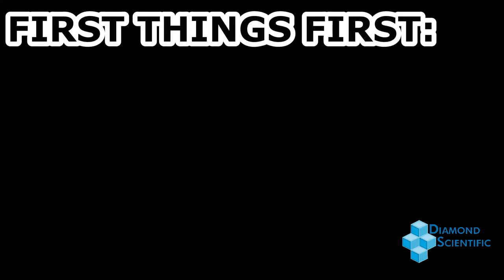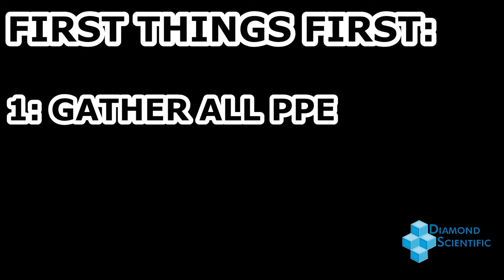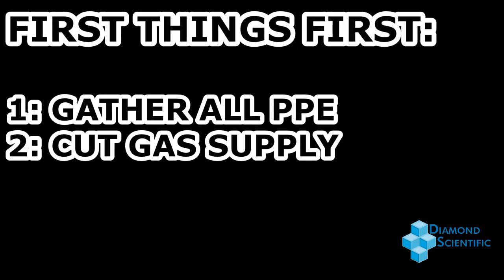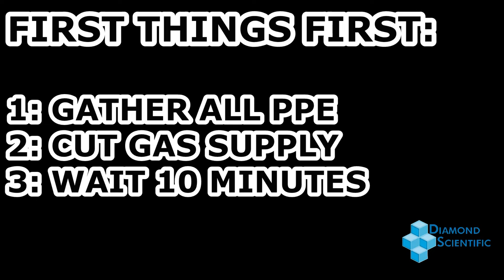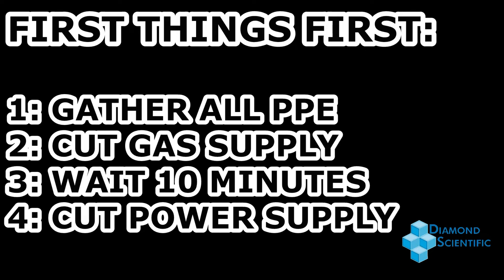First, whenever performing maintenance on the SWG 100, gather all appropriate personal protective equipment. Then you'll want to cut off the gas supply, allow 10 minutes for a full gas purge cycle to complete, before completely cutting power to the analyzer.